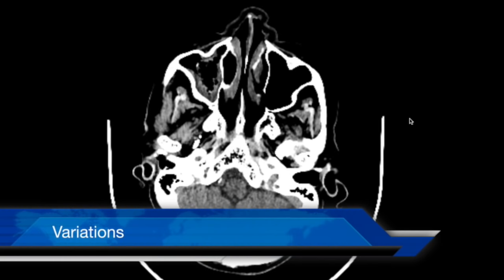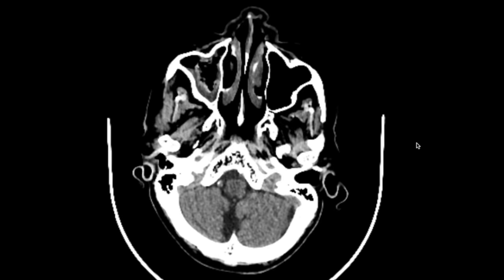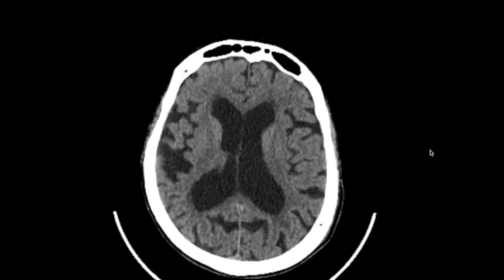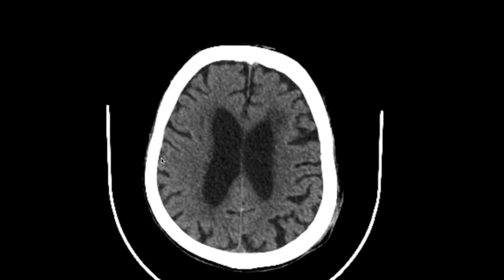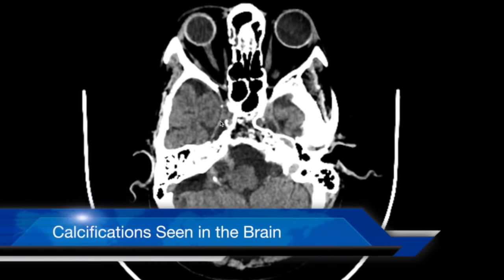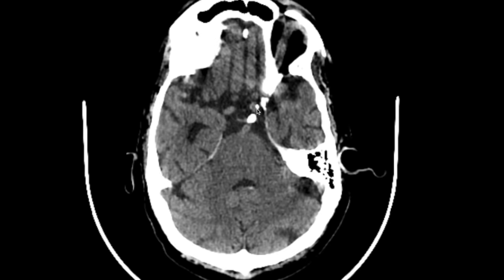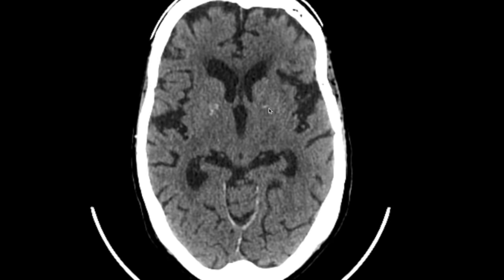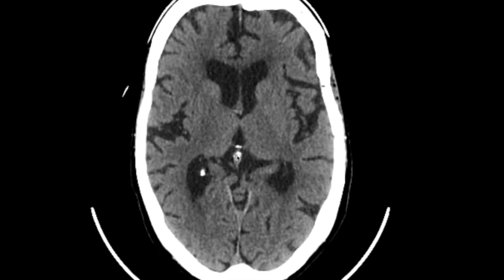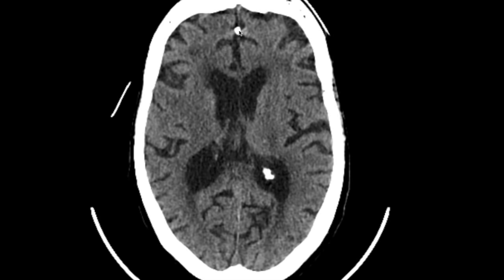Not all brains are alike — as we age there are changes that are variations rather than abnormalities. This scan is from a 91-year-old lady. The ventricles are distended and the sulci are very prominent, though the gyri still reach the edge. This is mild cortical cerebral atrophy, very commonly seen with aging. Commonly calcified structures include the internal carotid and vertebral arteries, the globus pallidus bilaterally, the pineal gland posterior to the third ventricle, the choroid plexus in the lateral and sometimes fourth ventricles, and the falx.